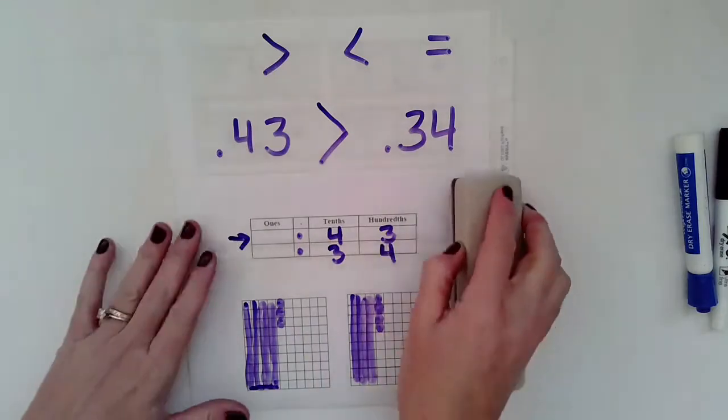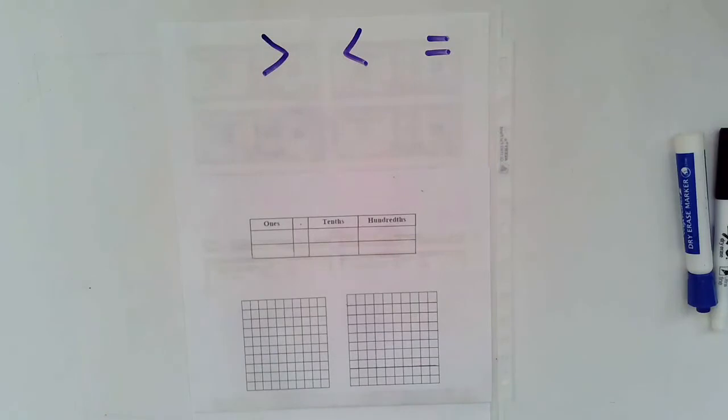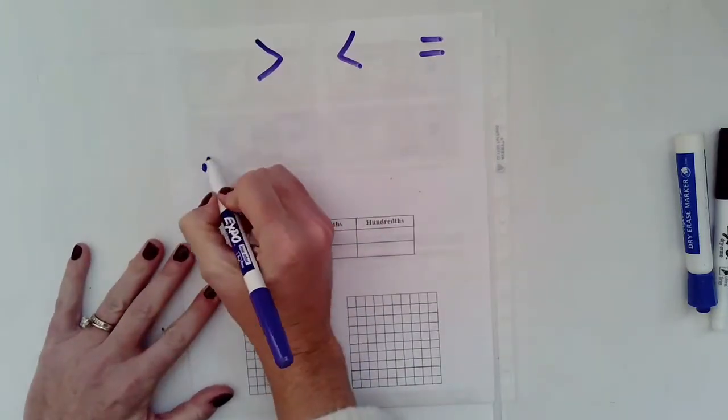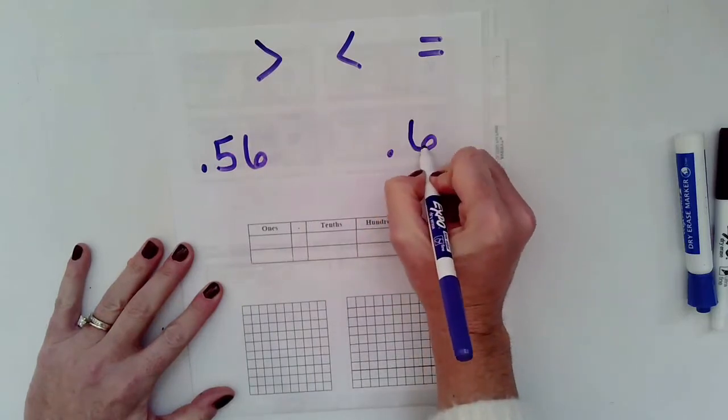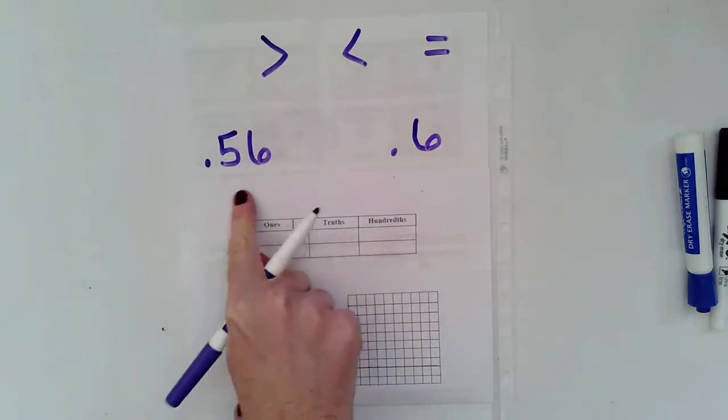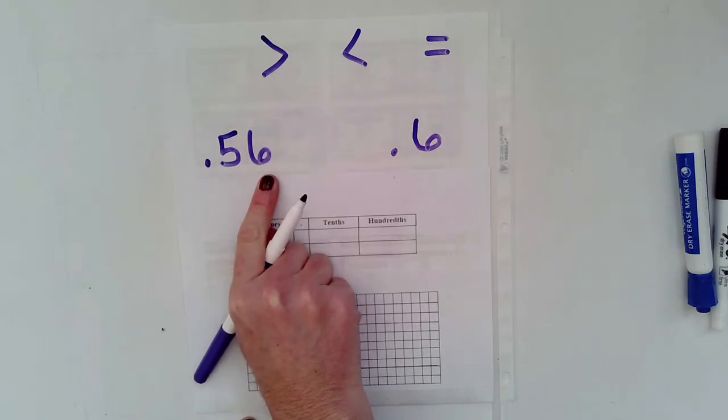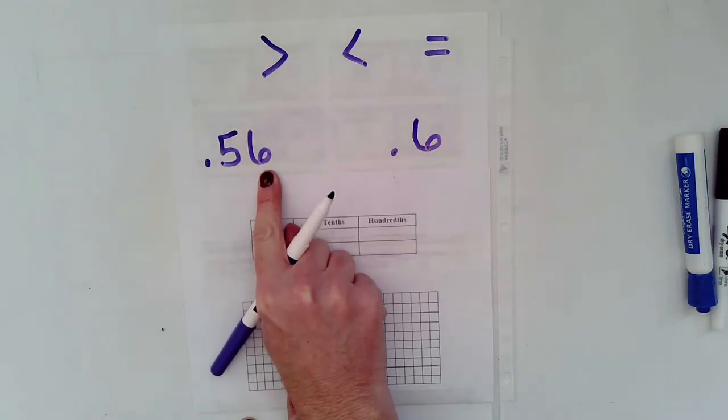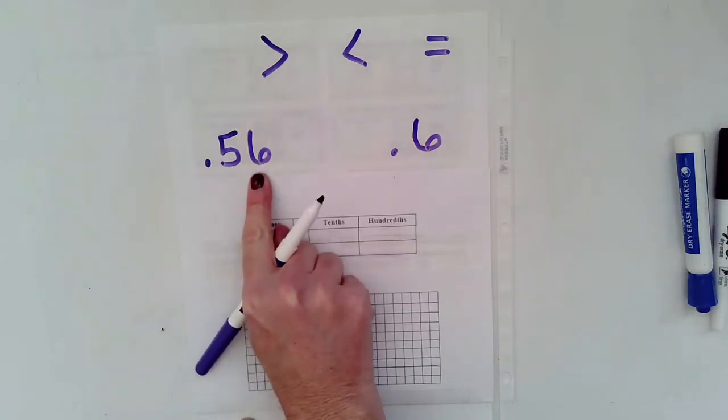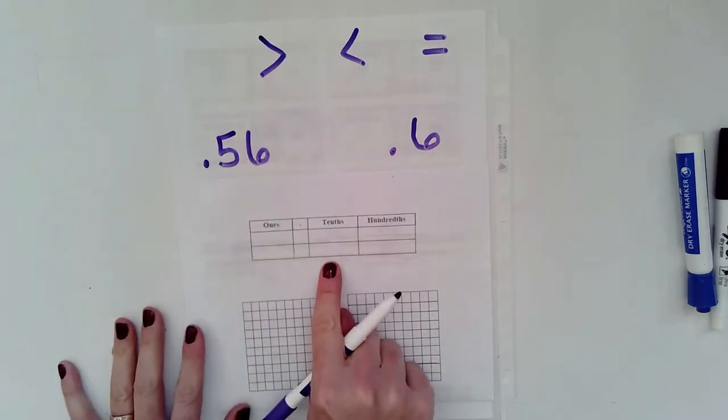Let's do another example. This time we're going to be comparing these two numbers. So when I look at these two numbers, at first glance, I want to say that 56 hundredths is bigger because it has more digits. Usually, numbers that have more digits are usually greater. But on the right side of the decimal, this is different. So, let's go ahead and look at our place value chart.